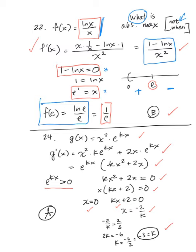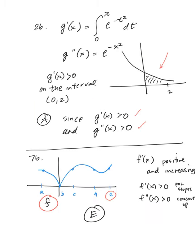In number 24, we're given x squared times e to the kx. We want to find what value of k gives G a critical point at x equals 2 thirds. I take the first derivative and factor out e to the kx. Since e to the kx is always positive, I factor out x and set the remaining piece equal to 0, getting x equals negative 2 over k. Setting that equal to 2 thirds and solving, I get k equals negative 3, or choice A.